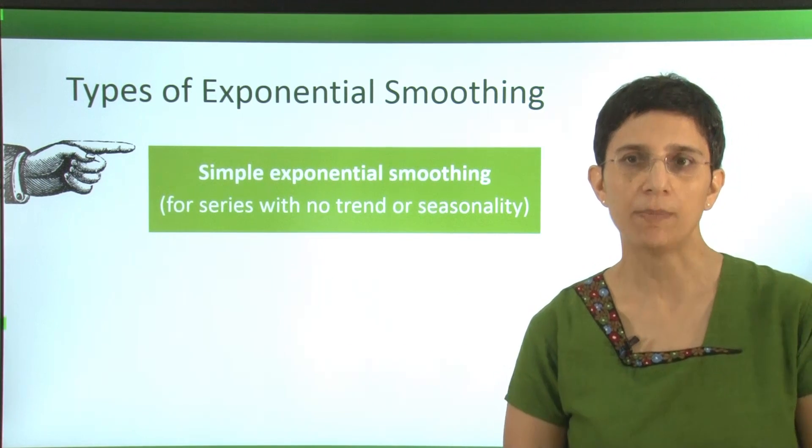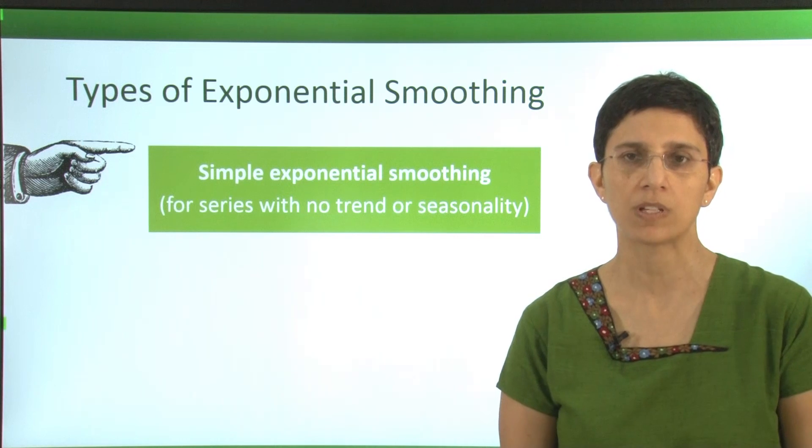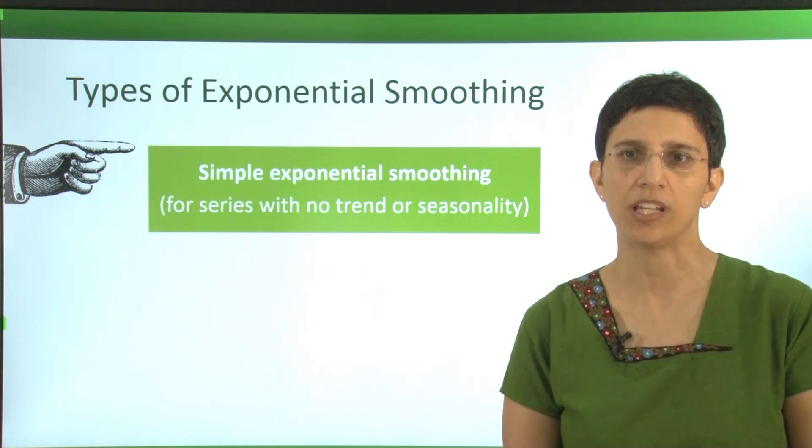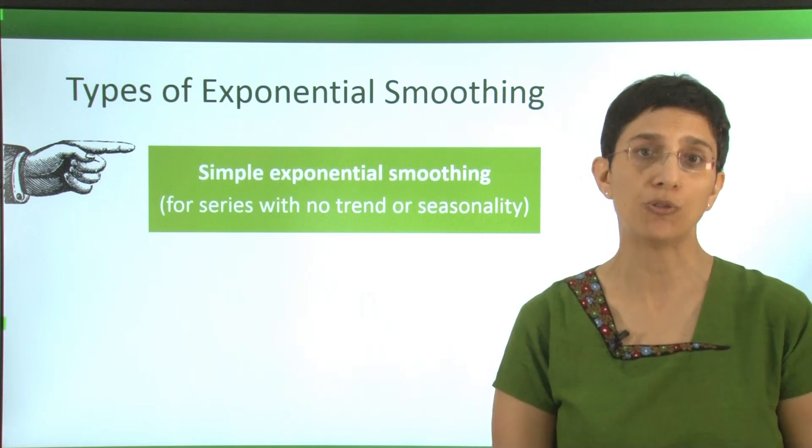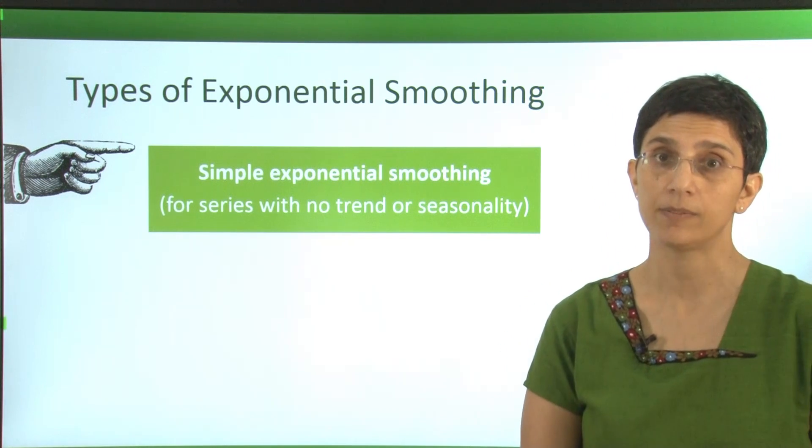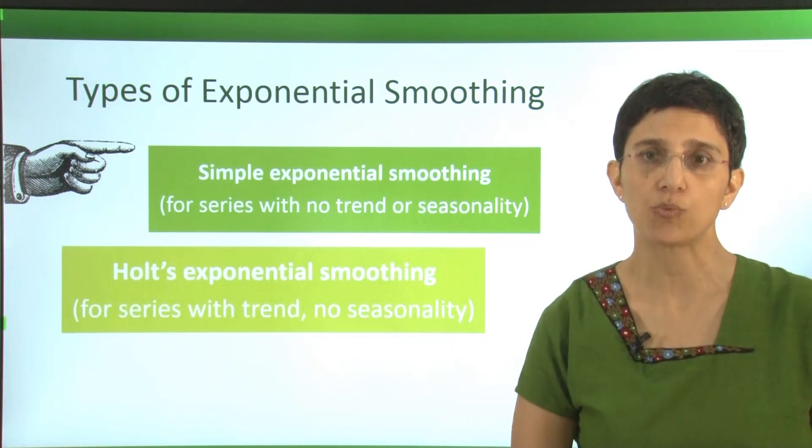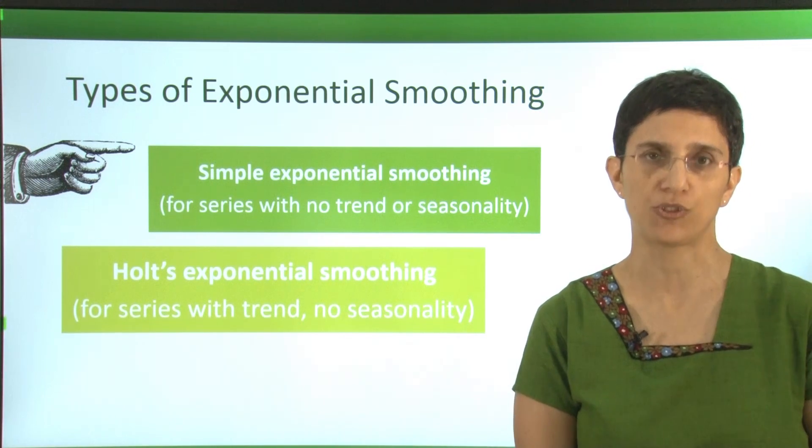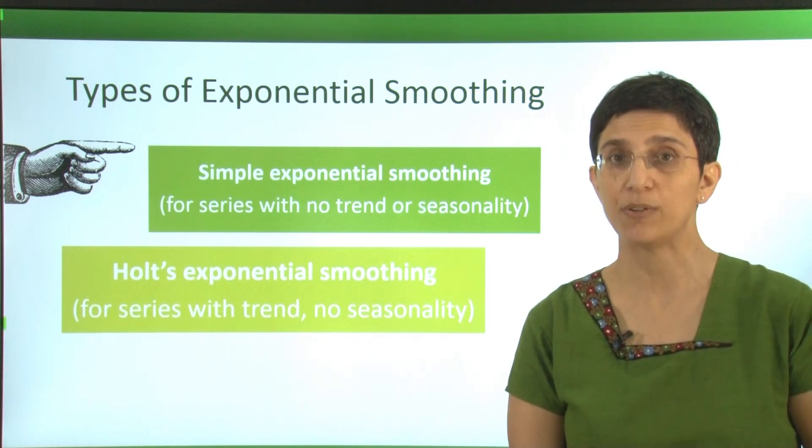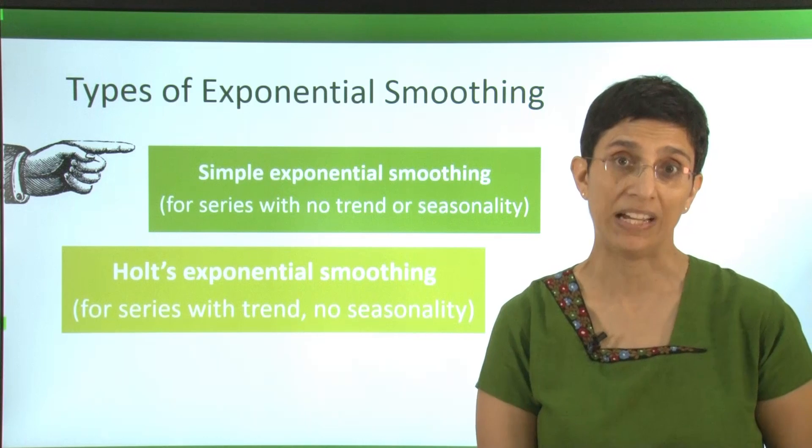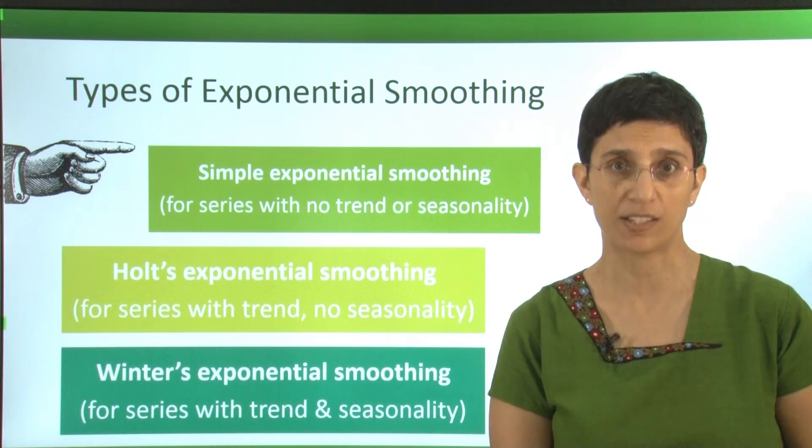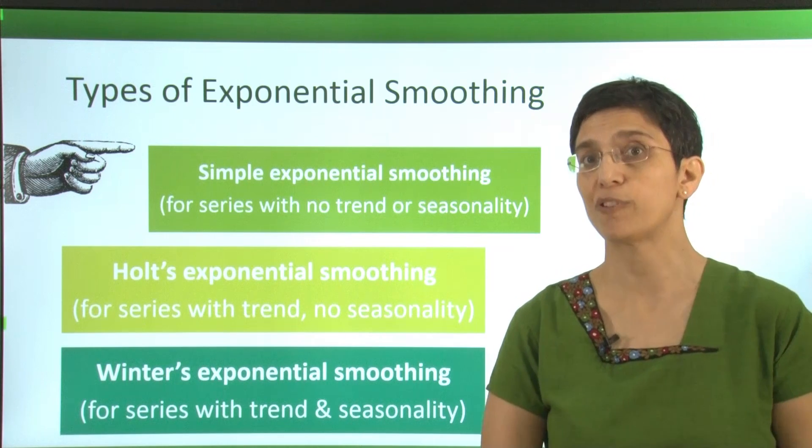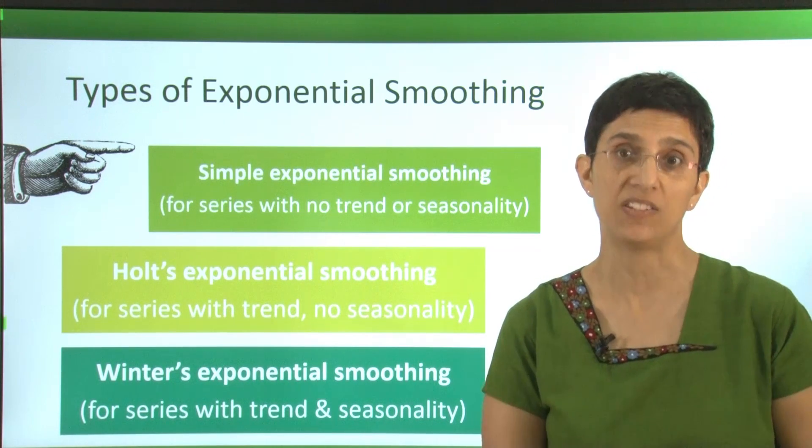We're going to talk about three types of exponential smoothing in this course. In this video, we're talking about simple exponential smoothing, which is suitable for a series with no trend and no seasonality. In future videos, we'll talk about Holt's exponential smoothing, which is suitable for a series that has a trend but no seasonality. And then we'll talk about Holt-Winters or Winter's exponential smoothing, which is suitable for series that have both trend and seasonality.